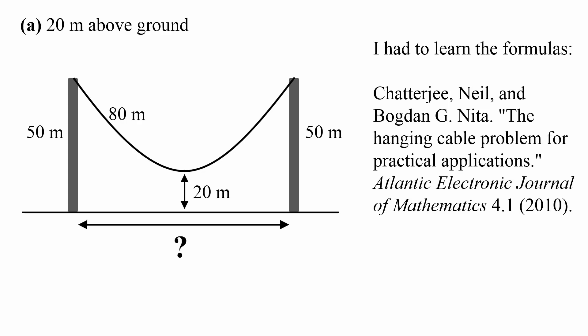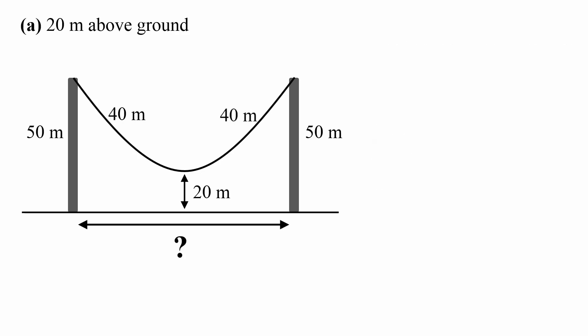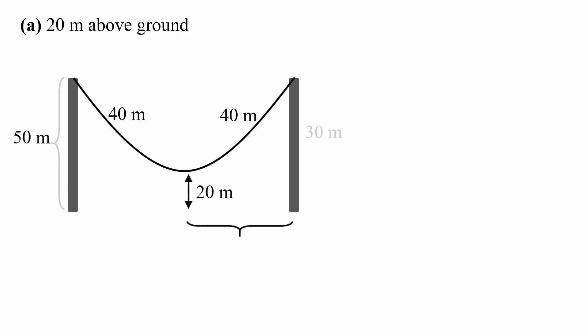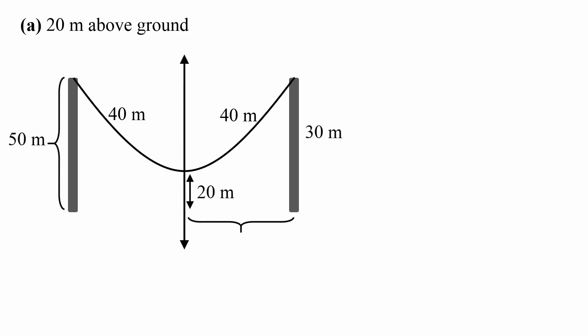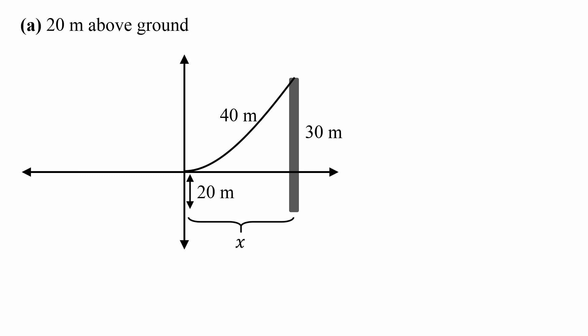We'll solve this problem using symmetry and a convenient coordinate system. First, we'll split the cable into two lengths of 40, then consider only the distance from the center of the cable to one of the poles, and double that distance to get the distance between the two poles. We'll use a coordinate system centered at the center of the hanging cable, with the y-axis at the center and the x-axis tangent to the lowest point of the cable.